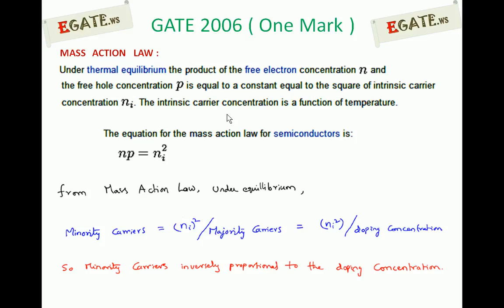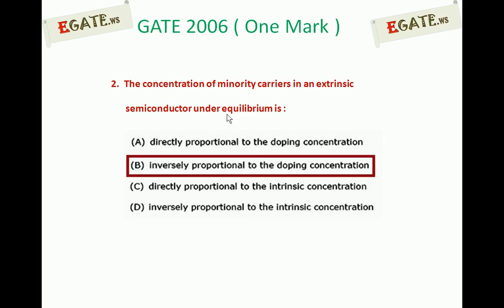The concentration of minority carriers from this equation is directly proportional to the square of intrinsic carrier concentration, and inversely proportional to doping concentration. So from the question, the correct answer is b — minority carriers are inversely proportional to doping concentration. Thank you.